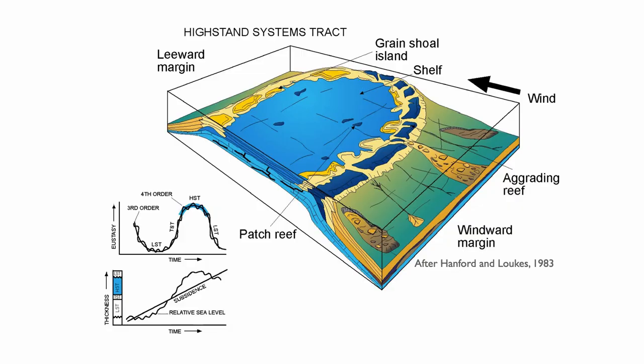A good analog for the high stand — especially a high stand higher than today — is isotopic stage 5e, where sea level was higher by about one to two meters compared to today, up to maybe six meters at the end of 5e, and temperatures were about one to two degrees higher. Stage 5e offers a somewhat chilling perspective on what could happen to isolated platforms during high stands higher than today.